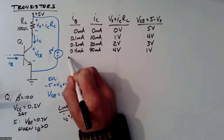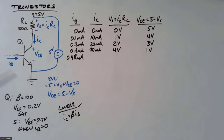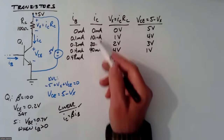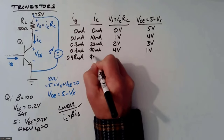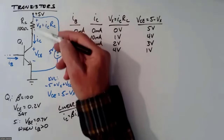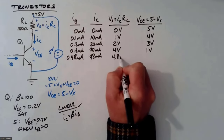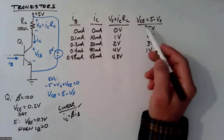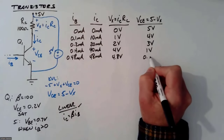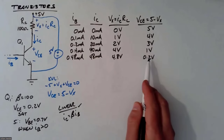With IB = 0.48 mA: IC = 0.48 × 100 = 48 mA. VX = 48 mA × 100 Ω = 4.8 V. VCE = 5 − 4.8 = 0.2 V. We're right on the edge of saturation — on the border between linearity and saturation.